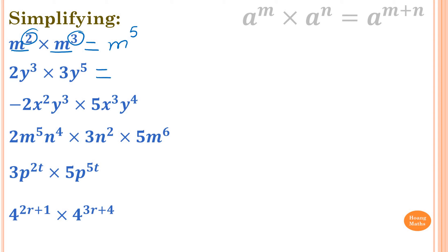Second one: 2 times 3 is 6, so we just write 6 down. y to the power of 3 times y to the power of 5 — both same base, so we add the indices. 3 plus 5 is 8, so 6y to the power of 8.